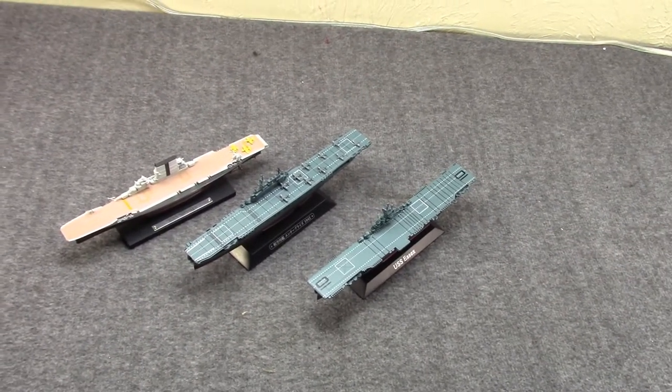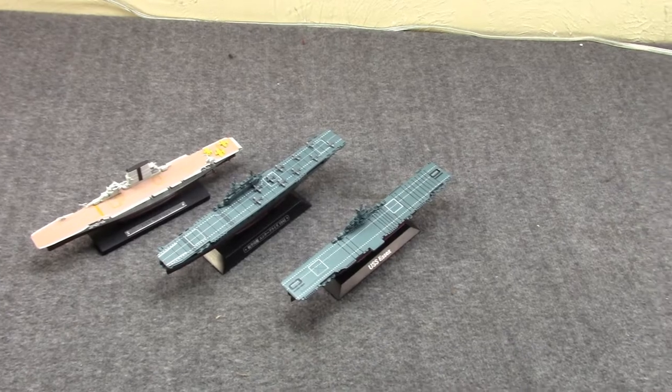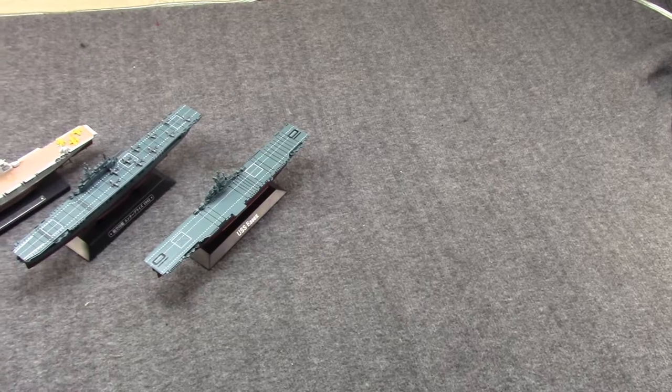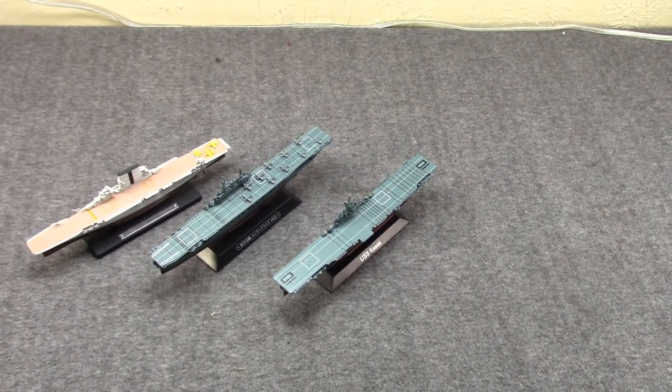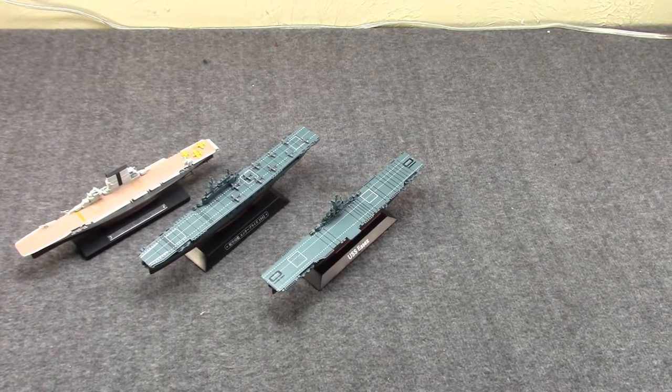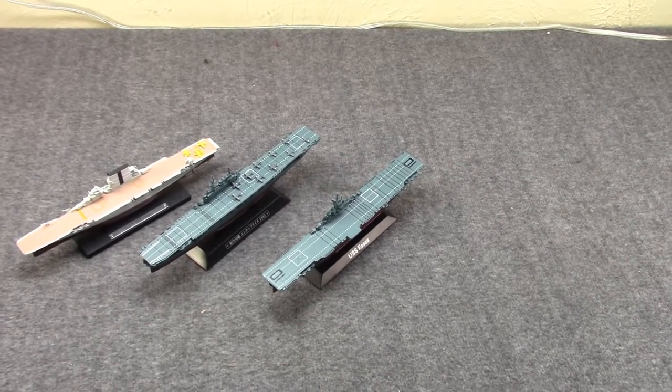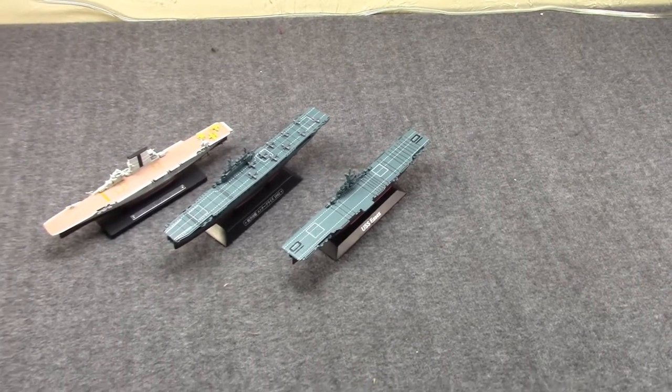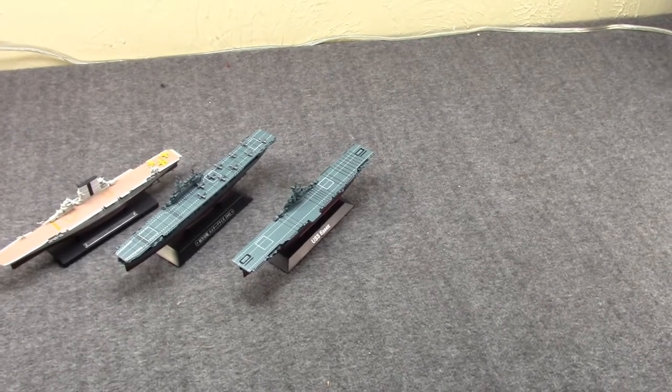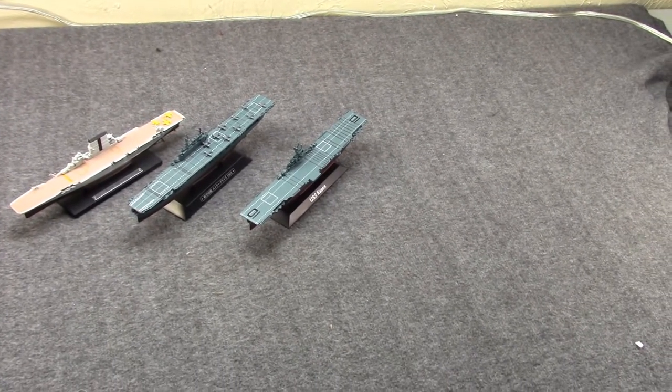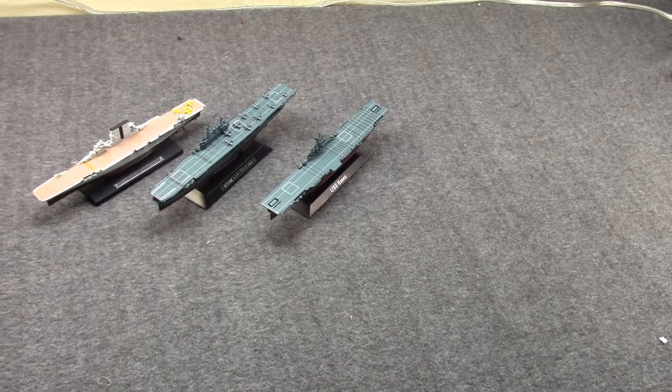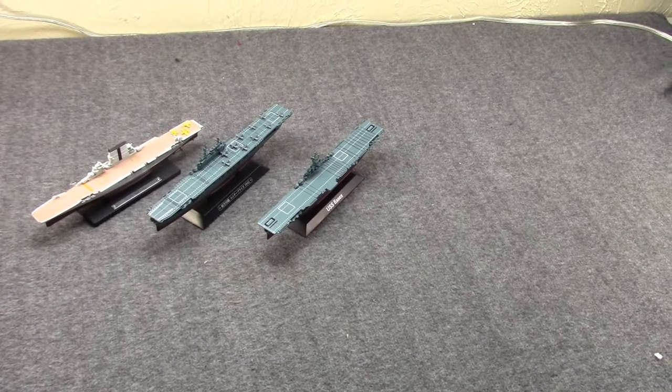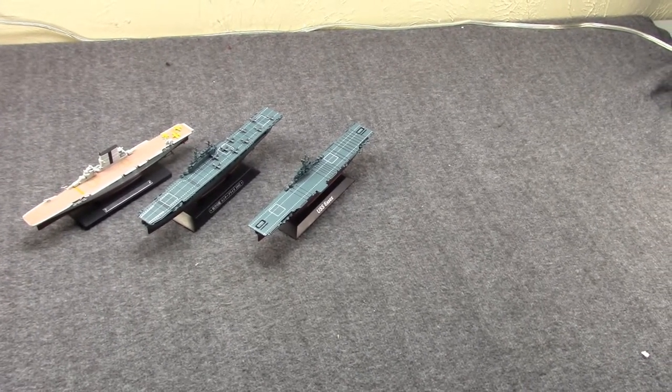The one on the left is from Atlas Editions, the middle is from Eagle Moss, and the one on the right is from De Agostini. The two on the ends are one 1250 scale, and the Eagle Moss in the middle is one 1100 scale. All three being die cast. Well, with that, let's just do a little brief talk about each one and their place in history and how World War II really prepared America and propelled it to the forefront of naval power during the Cold War era.